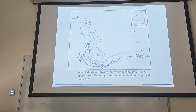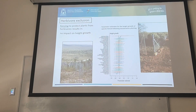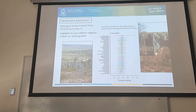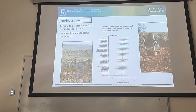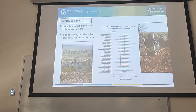A different approach was a wide-scale analysis where we have a whole range of translocations — you can see the dots scattered across the southwest of Western Australia across a whole range of rainfall zones and climatic conditions. We aggregated survival, growth, and reproduction from 53 species across 60 sites, with monitoring data for two decades following translocation. We found that fencing plants didn't significantly impact height or width growth — in fact it had a tiny negative impact — but it had a massive positive impact on survival across a whole range of species and rainfall zones.